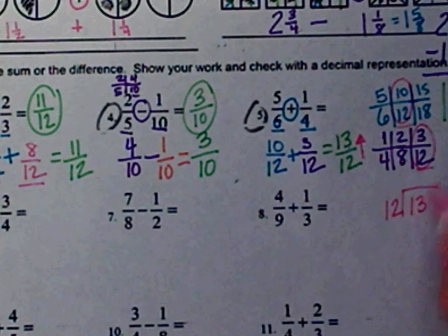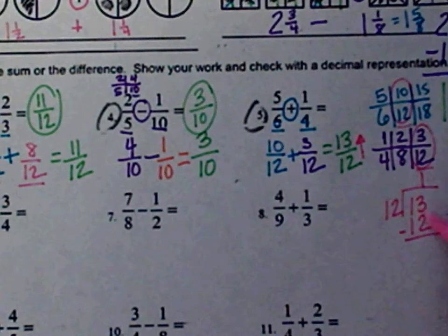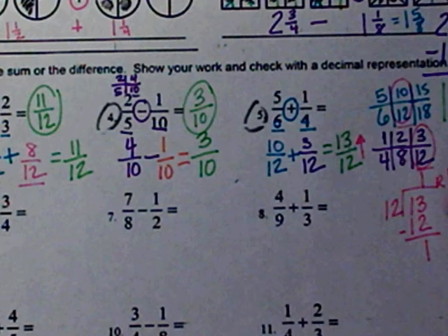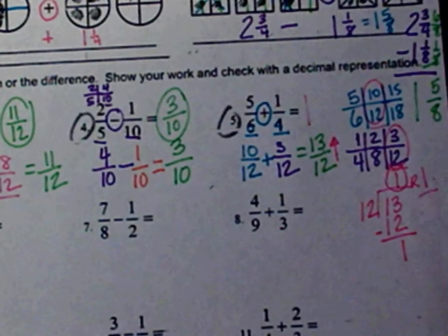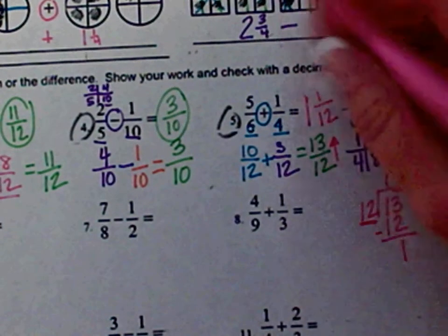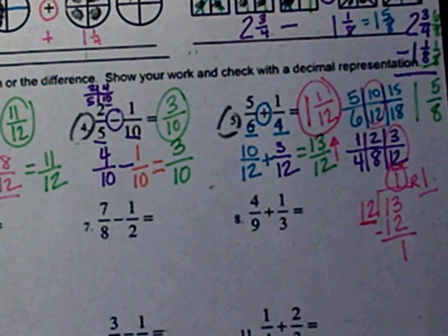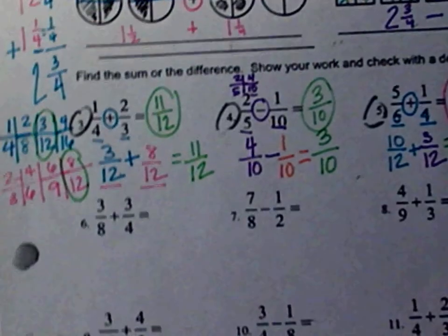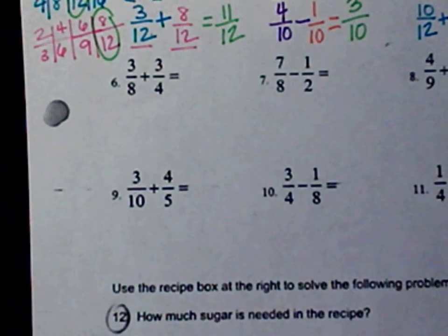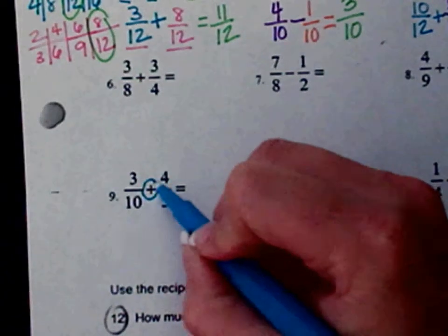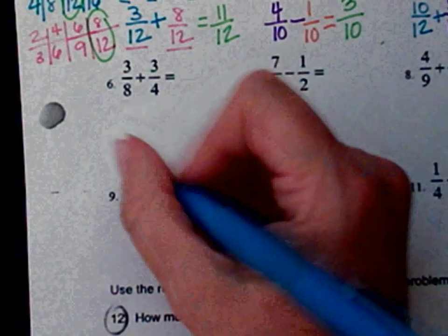One-fourth I rewrite as three-twelfths — equivalent, but now with a common denominator. This is an addition problem, so I add: thirteen-twelfths. But that's an improper fraction, so I need to make it a mixed number. I divide the denominator into the numerator: twelve goes into thirteen one time. One times twelve is twelve, remainder one. So my whole number is one, my numerator is one, my denominator is twelve — my answer is one and one-twelfth.